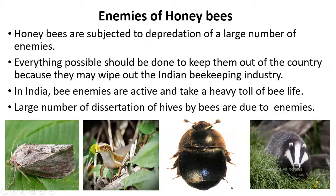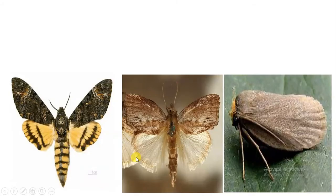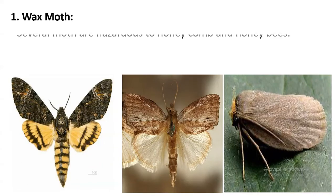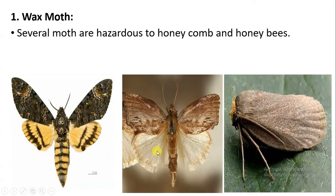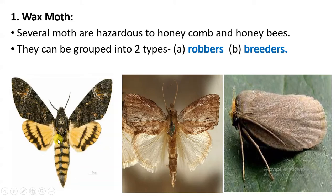Whenever these enemies attack the honeybees, the honeybees abandon the hive — this is called desertion. The very first enemy we will discuss is the wax moth. There are several moths which cause great harm to the comb and also to the honeybees. They are classified into two types: first, the robbers, and second, the breeders.